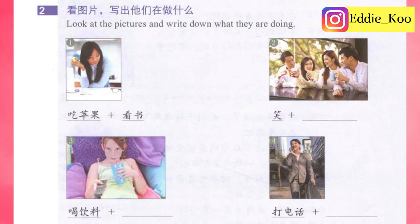Now let's move on to the second part. 二，看图片，写出他们在做什么。Look at the pictures and write down what they're doing. Picture 1 — 吃苹果，eat apple，plus 看书，read books. Picture 2 — 笑，to laugh，plus 聊天，to chat.